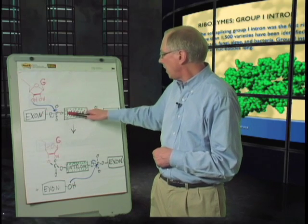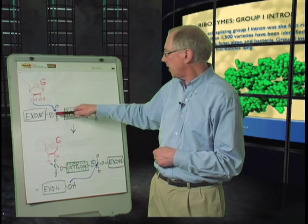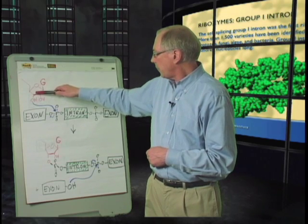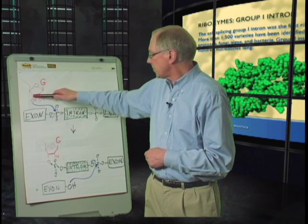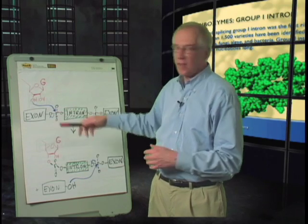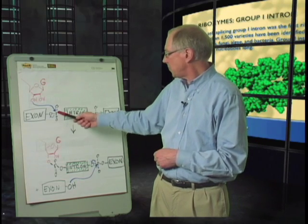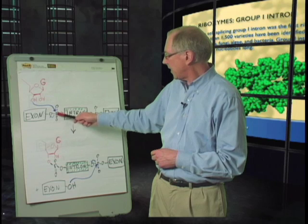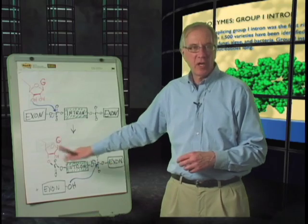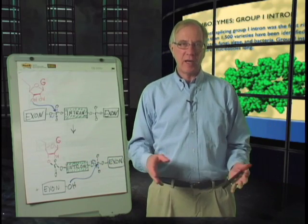You start out with one ester linkage, in this case a phosphodiester linkage, and you now, using the hydroxyl group of the ribosugar of guanosine as a nucleophile, attack at this site. It's also called an SN2 reaction, as you've probably studied in your organic chemistry class. And this swapping of partners in this ester linkage turned out to be the key mechanism of RNA splicing.